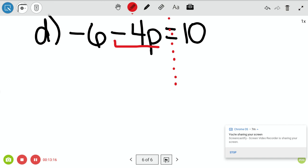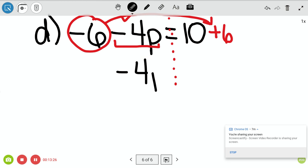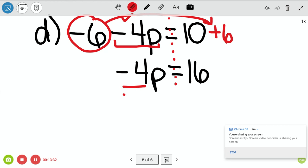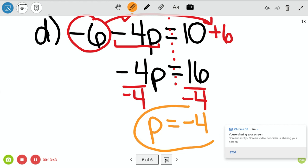Alright, the negative 4P is good. The negative 6 is not. Let's move it over. Make it a positive 6, and that would leave you with negative 4P. 10 plus 6 is 16. And then we divide by negative 4 on both sides. And we get P equals a positive divided by a negative would give us a negative 4. I hope you did well.